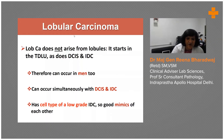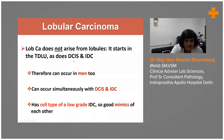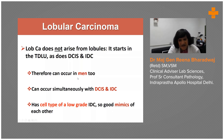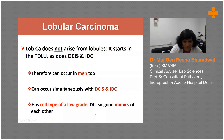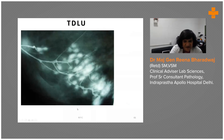Lobular carcinoma of the invasive type — they do arise from lobules, originating from TDLUs, as do DCIS and IDC. Therefore, ILCs can occur in men. They can be associated along with DCIS and IDC. The cell type is often low grade, though they can mimic each other.